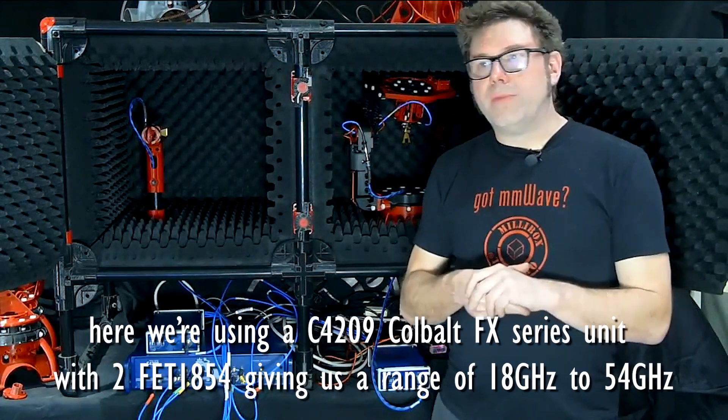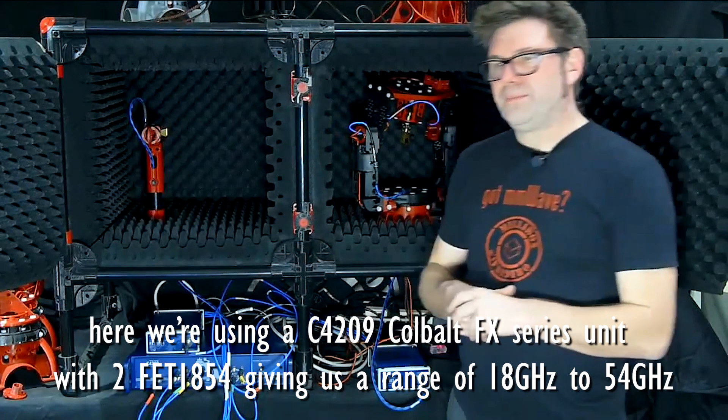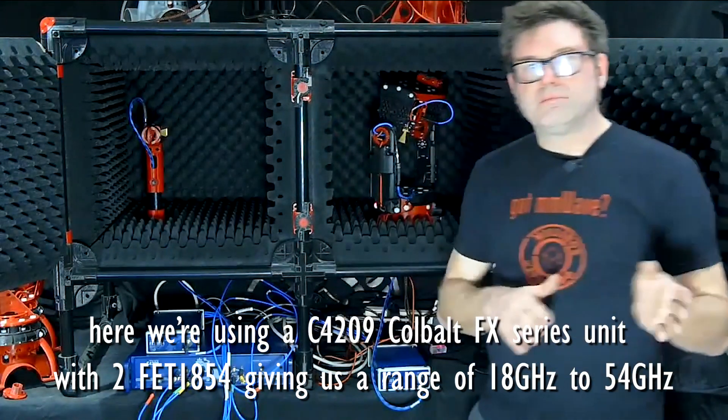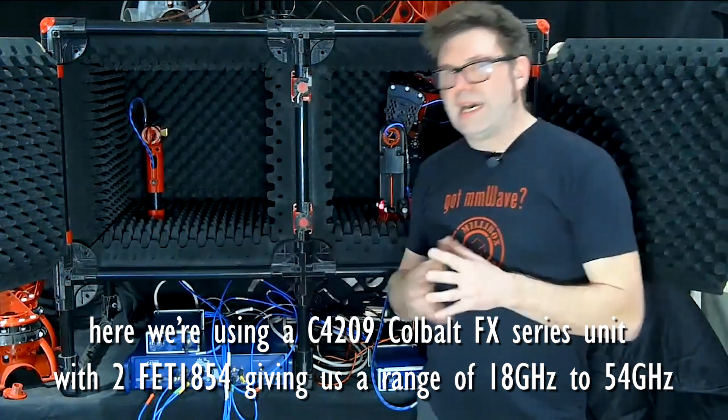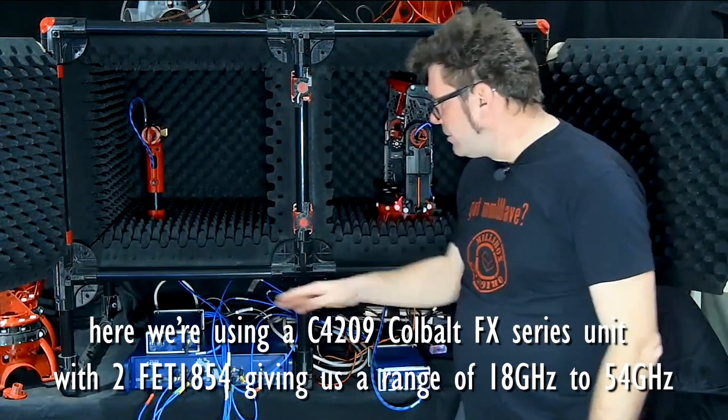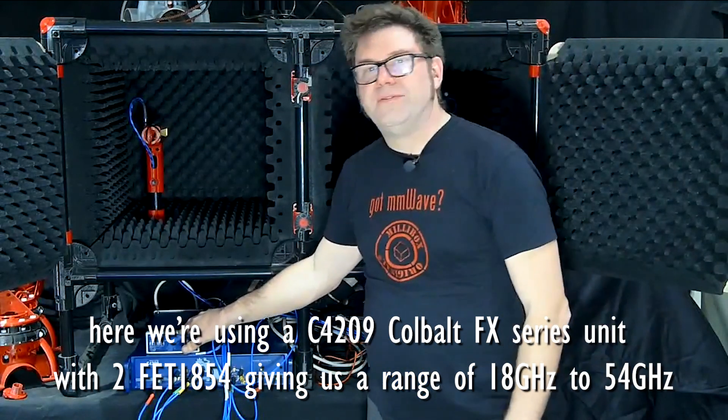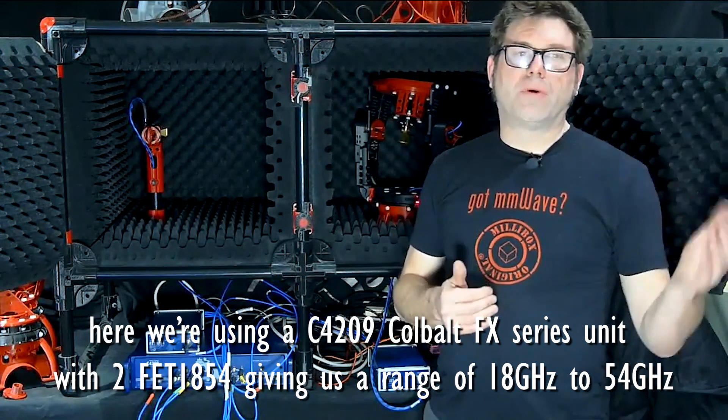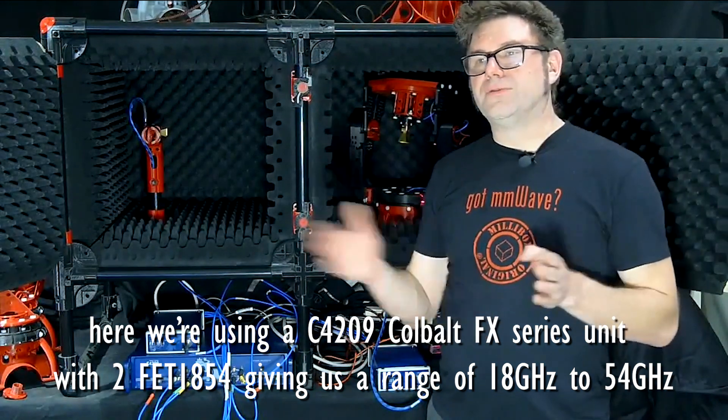Here we're using the Cobalt FX series, that's made of a base unit that's 0 to 9 GHz VNA, and then we have two extenders, the FET1854, that bring us to a range of 18 GHz to 54 GHz.